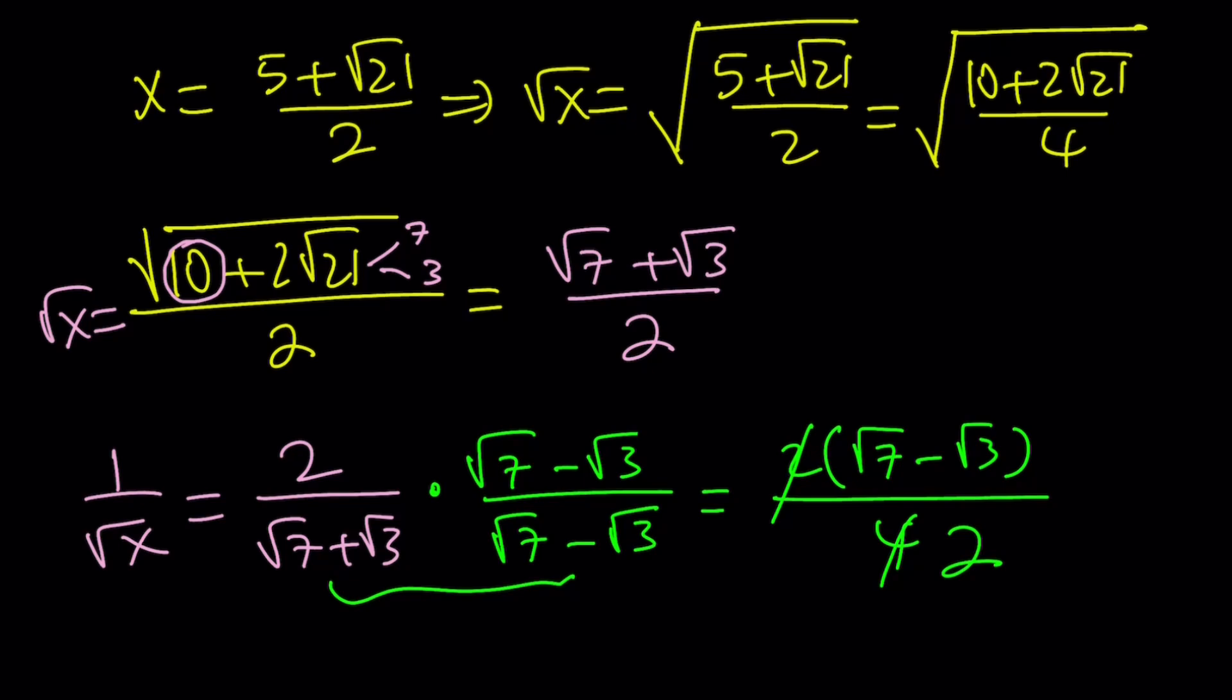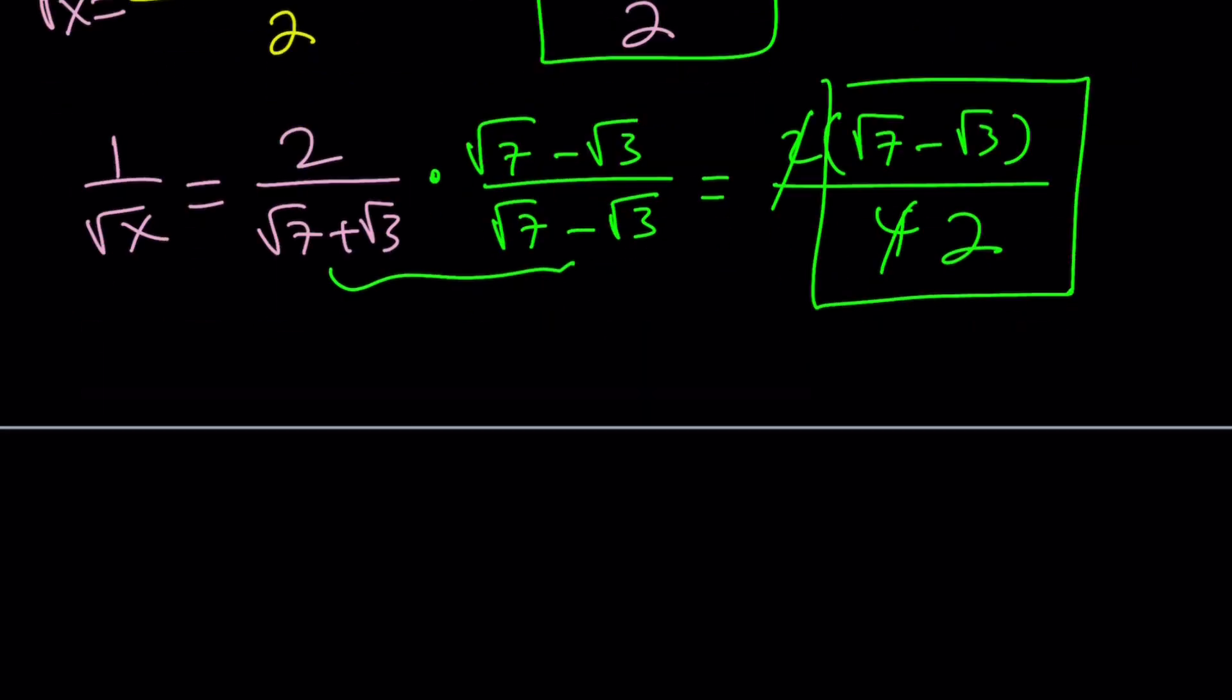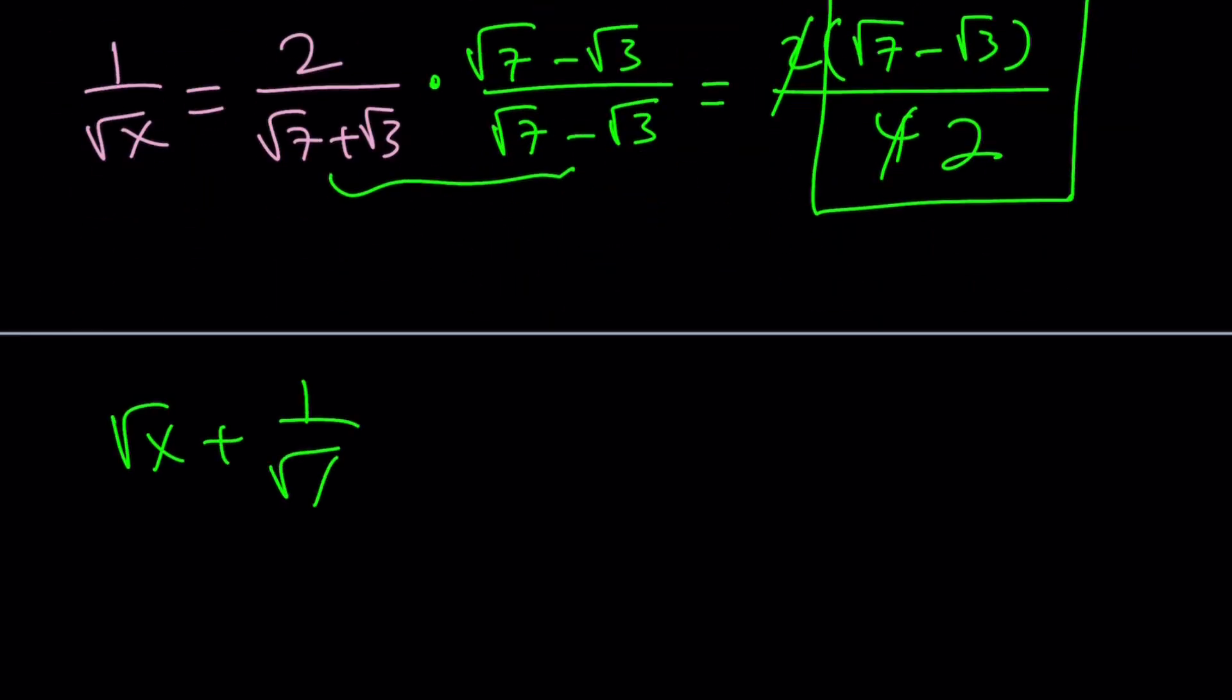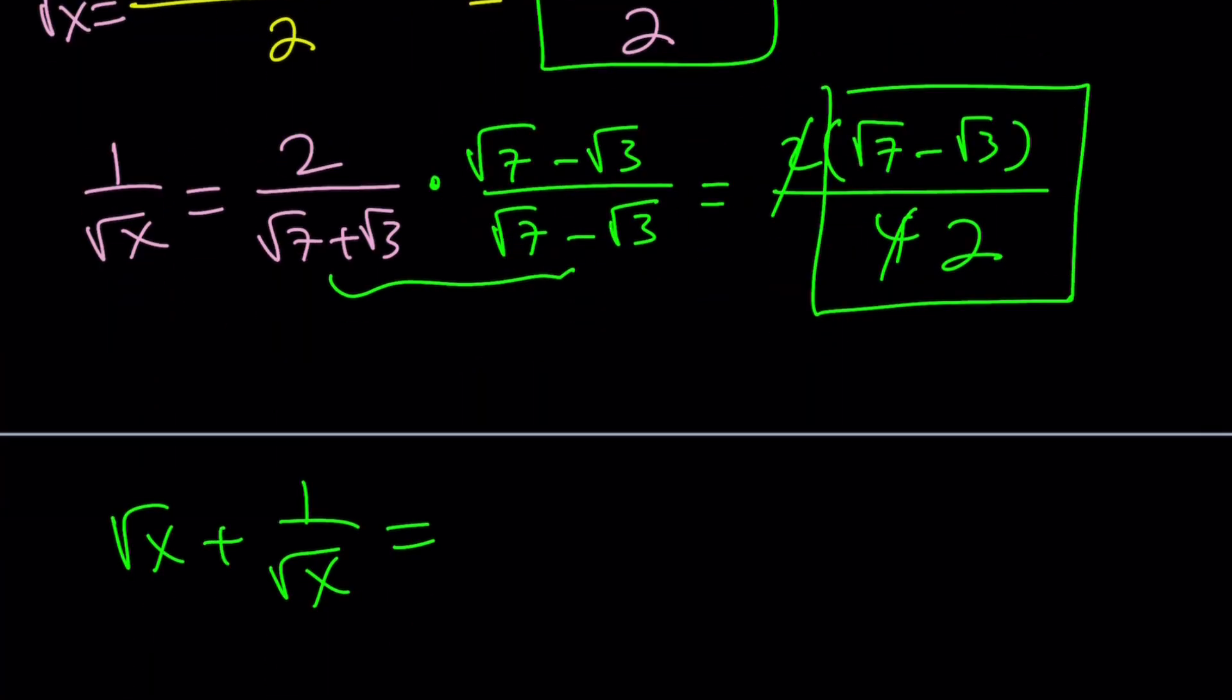There's something interesting about these numbers: root x and its reciprocal are actually conjugates, which is good, because when we add them, something is going to cancel out. So, root x plus 1 over root x, since square root of x is root 7 plus root 3 over 2, and its reciprocal is just its conjugate, root 3 is going to cancel out. 2 root 7 divided by 2 is going to give us root 7. That is valid, because x was positive.